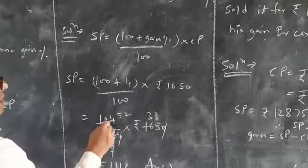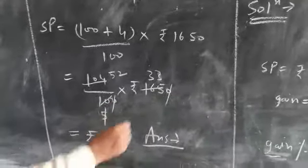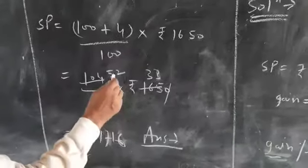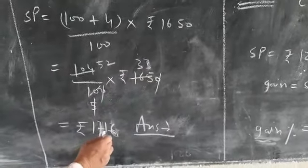We will get 104 upon 100 into 1650. Then, after solution, we get 52 into 33, that equals 1716.